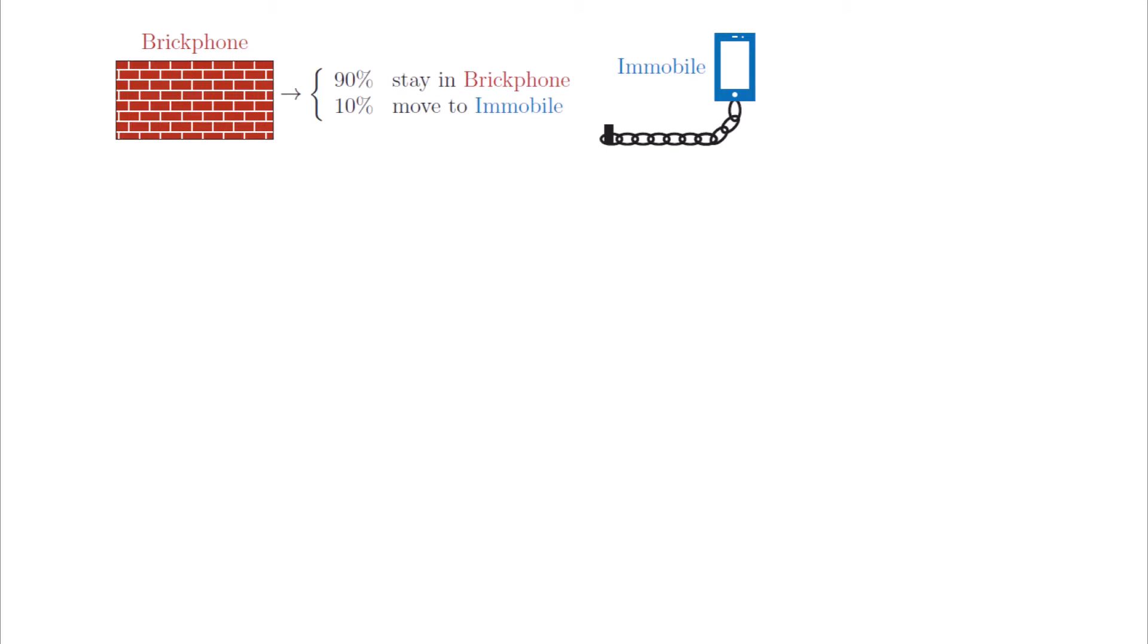Initially, the provider split the customer base equally. But then every month, 10% of Brickphone customers moved to E-mobile, while 90% stayed with Brickphone. At the same time, 40% of E-mobile customers moved to Brickphone, and 60% stayed with E-mobile. This went on for a while.